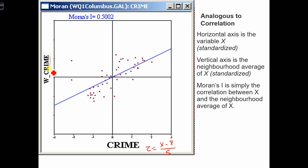On the y-axis, on the vertical axis, we are going to have the neighborhood average of x.